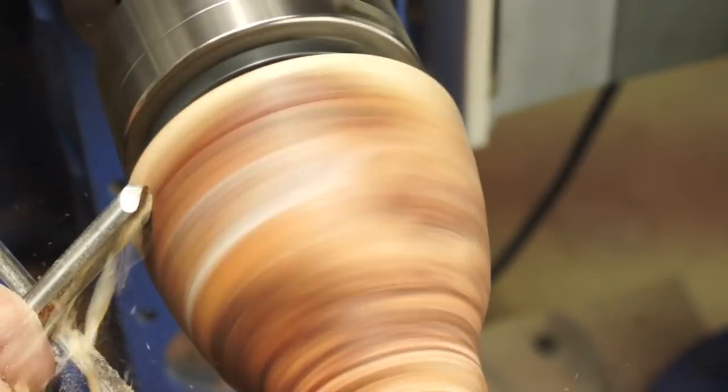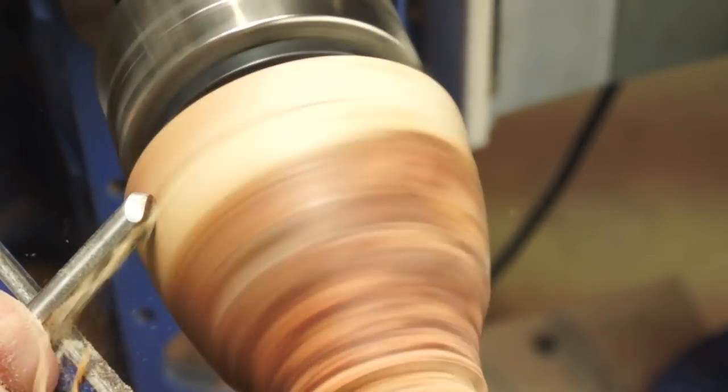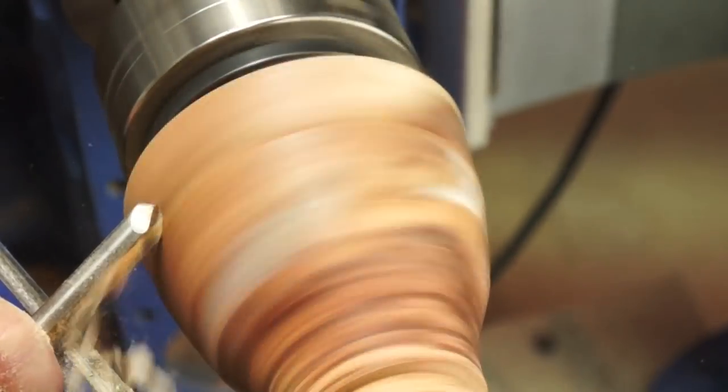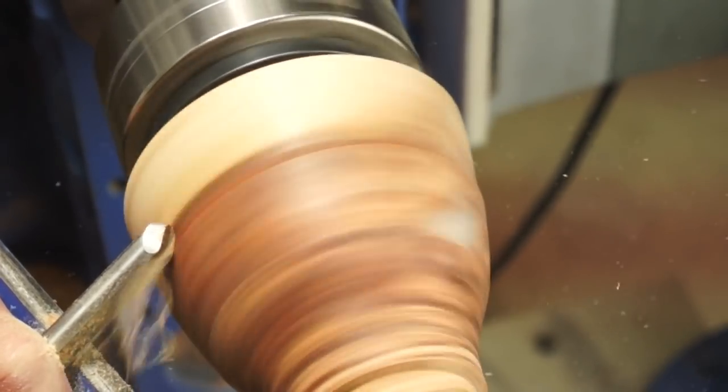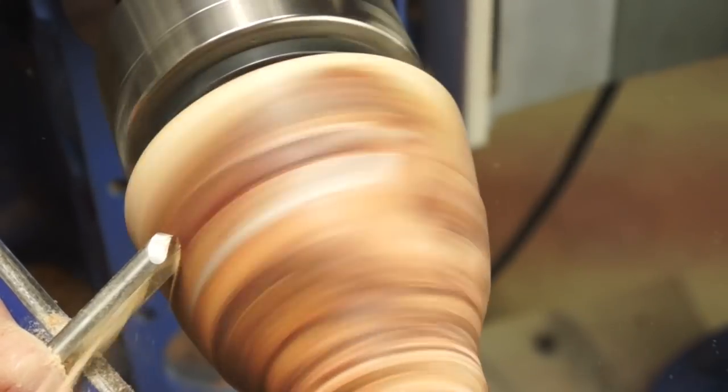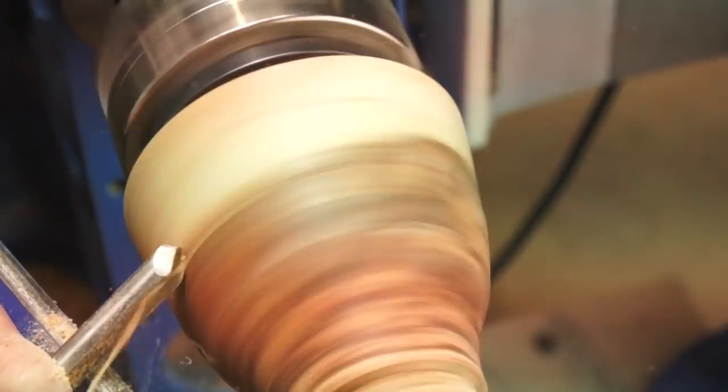Another advantage of the large cutting surface is control. Just like a cabinet maker uses a larger hand plane to create a straight flat board, the turner uses the wider cutting surface of the side grind gouge to create a smooth flowing curve instead of an irregular one.